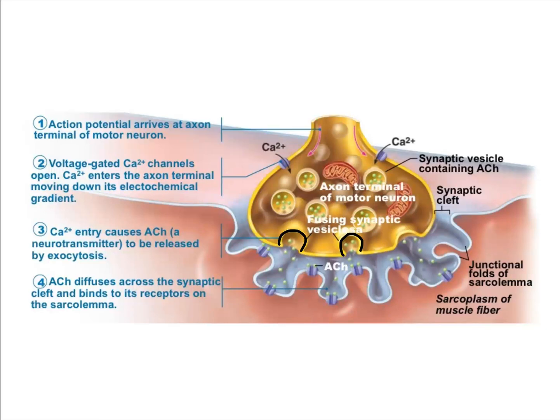The function of calcium ions flowing in is that it causes vesicles down in the cell membrane of the neuron to open up. When the vesicles open, that sends acetylcholine throughout the synaptic cleft — the space between the neuron axon terminal and the muscle membrane, which gets its own individual name: the sarcolemma.